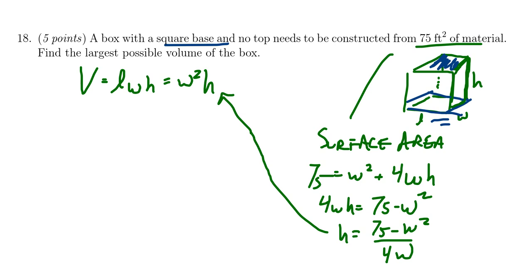We're going to make this substitution in for h like so, so that volume becomes w squared times 75 minus w squared over 4 times w.